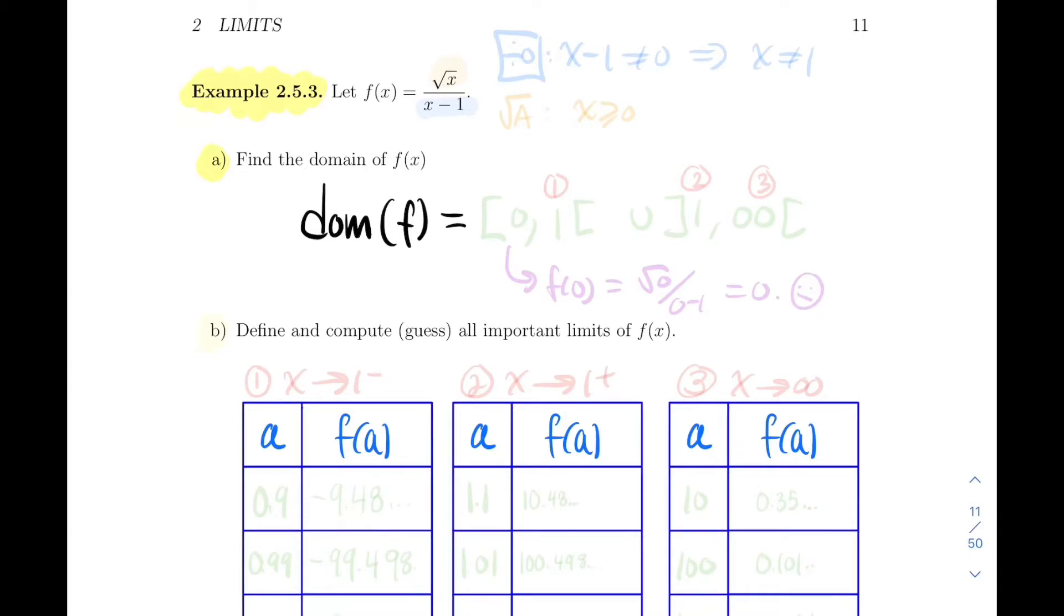First we see a division here, so we don't want to divide by zero. Taking care of the division by zero problem, x minus 1 cannot be zero. This of course will give us that x cannot be equal to 1, so 1 is not part of the domain.